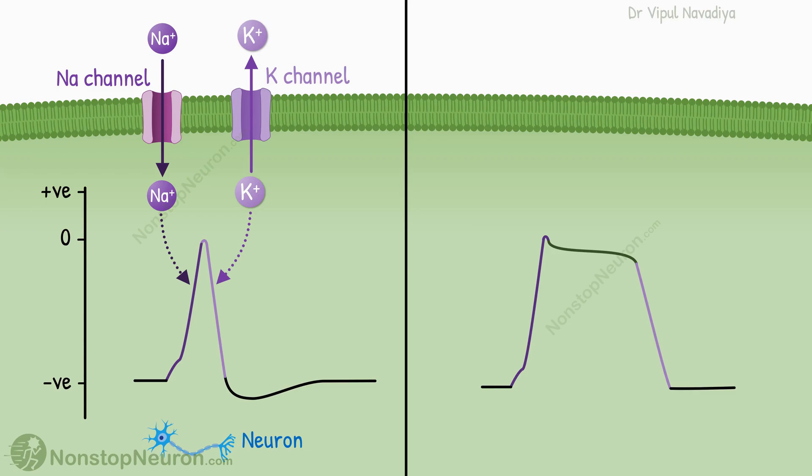Now, in certain cells, we see a prolonged depolarized state called plateau. For example, in cardiac muscle cells, a 0.2 to 0.3 seconds long plateau is seen.